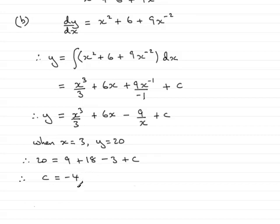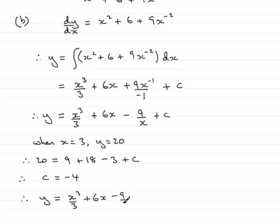So substituting c = −4 back into the equation gives the curve the equation: y = x³/3 + 6x − 9/x − 4. And that gives the equation in the form y equals some function of x. And that brings us to the end of question 11.